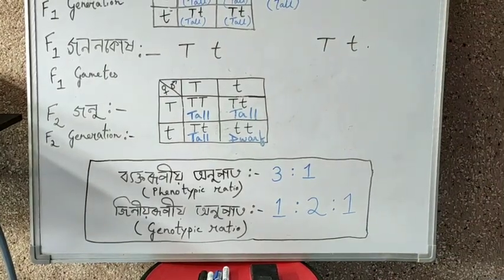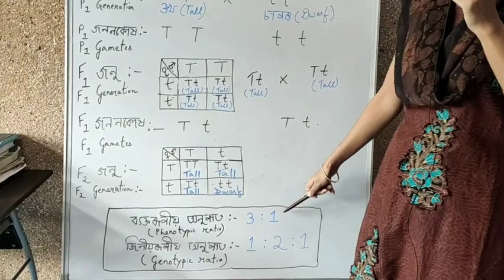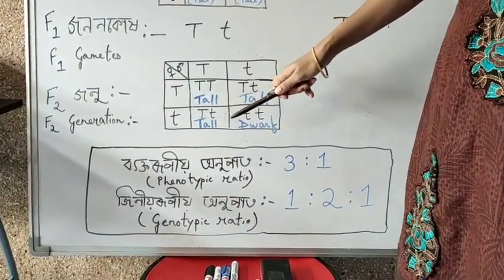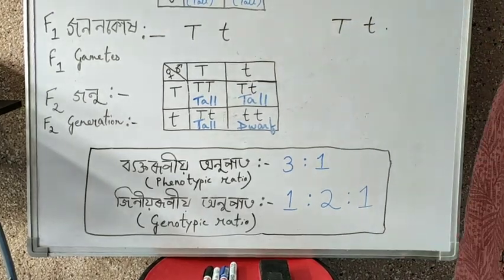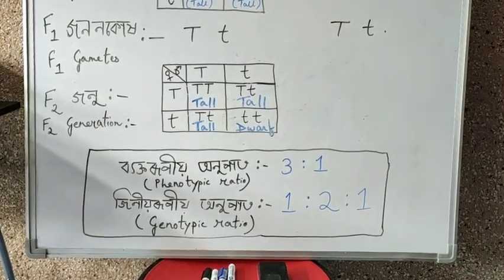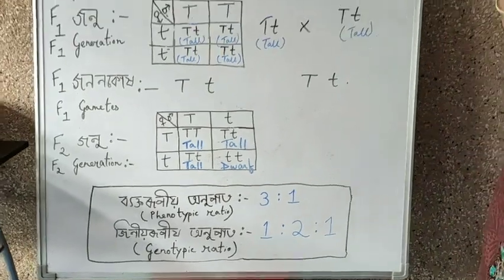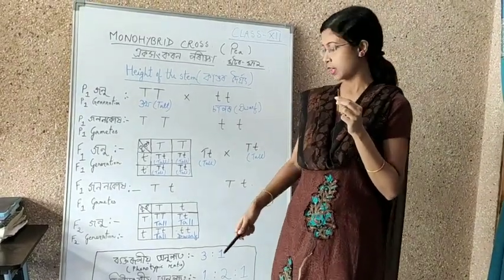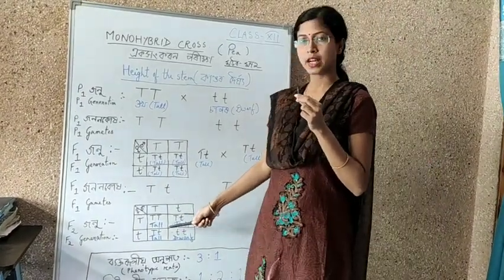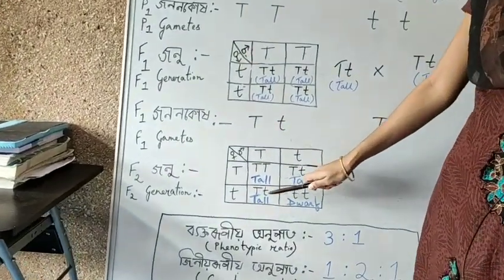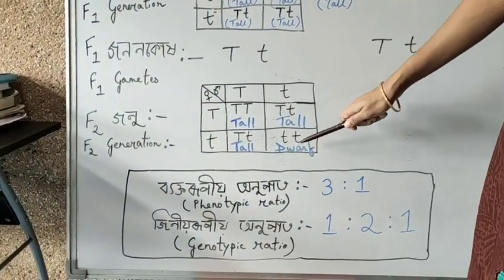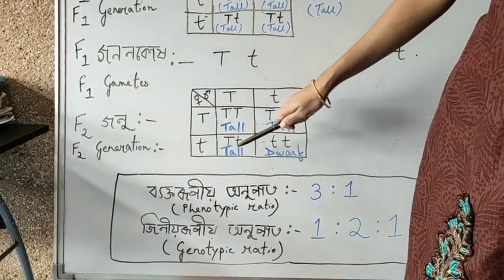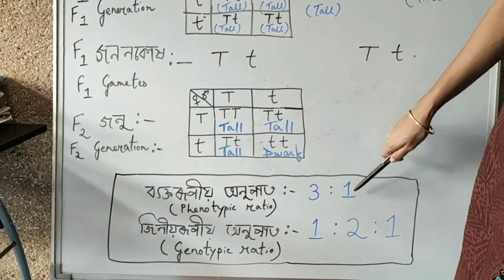The phenotypic ratio is 3 to 1. The character that can be observed with our eyes is known as the phenotype. Three tall plants to one dwarf plant. The phenotypic ratio is 3 to 1.